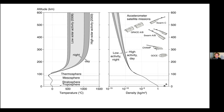These temperature changes are linked to changes in density. The temperature determines the scale height of the upper atmosphere. Between the tick marks on the density plot you can see five orders of magnitude. At 600 kilometers, the difference between day and night is almost an order of magnitude, and the difference between high and low solar activity can be two or three orders of magnitude. The variability is enormous compared to lower atmospheric layers. Also shown are satellites carrying accelerometers used for my research.